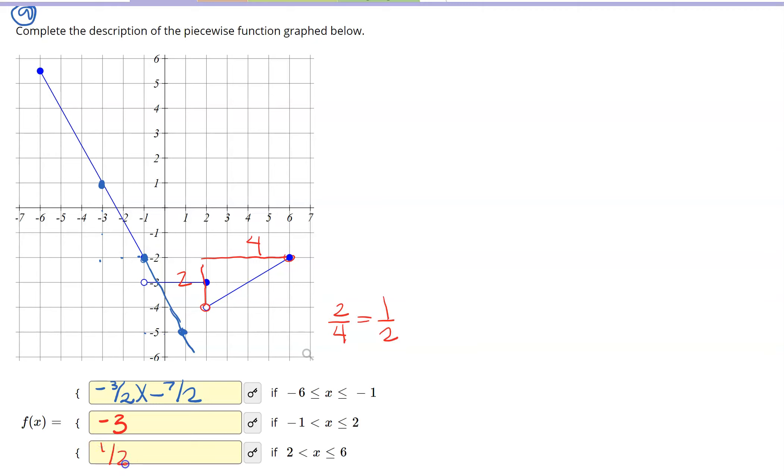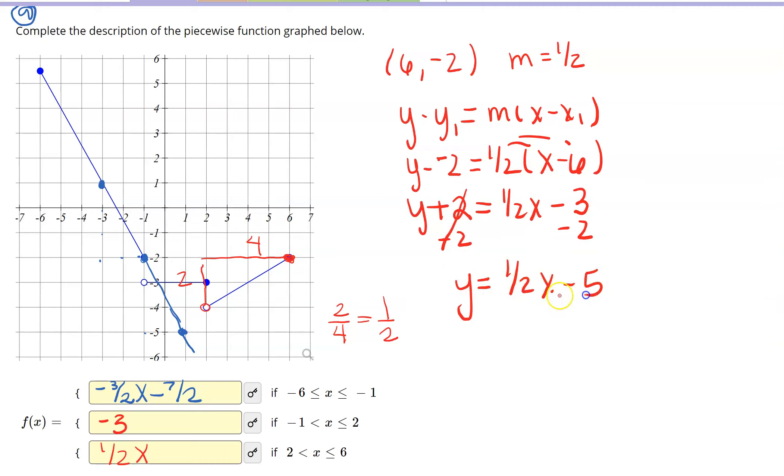So I already know the slope is 1 half x, and I'm just going to do it like I did before. I'm going to use this point right here. And so I have the point 6, negative 2, and I have a slope of 1 half, and just follow your equation again. Now you could use y equals mx plus b if you're more comfortable with that. Either way, we're going to get the same answer. So I'm just filling everything in. I'm going to distribute. Now this is a plus 2 because it's a double negative, so that gives me 1 half x minus 3, and then subtract the 2 over. So that gives me y equal to 1 half x minus 5.